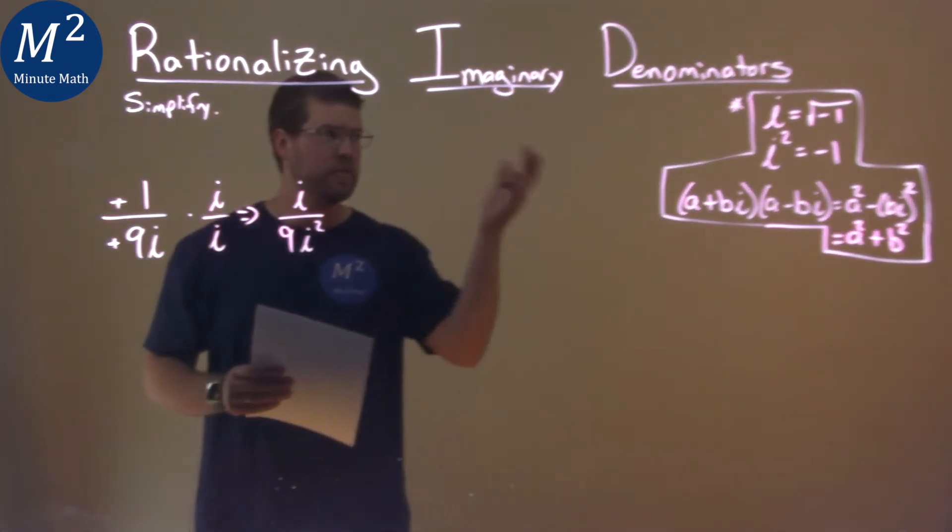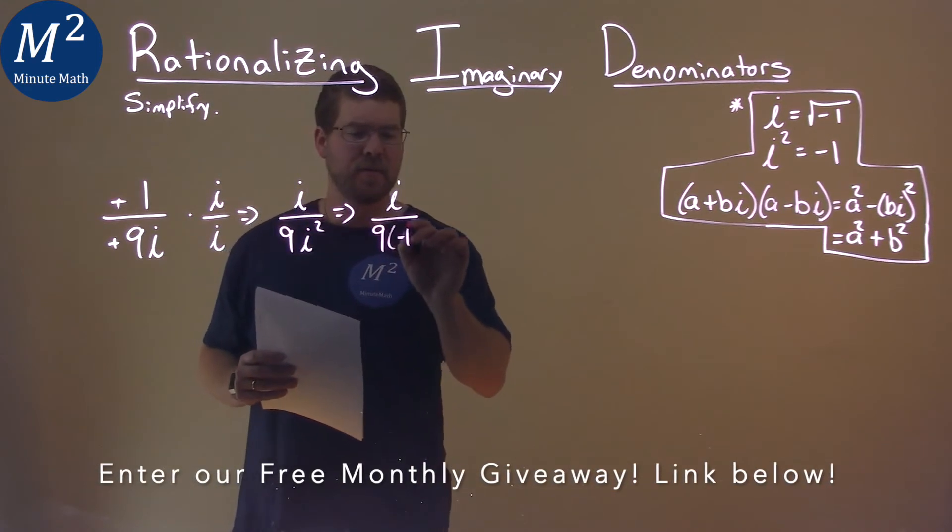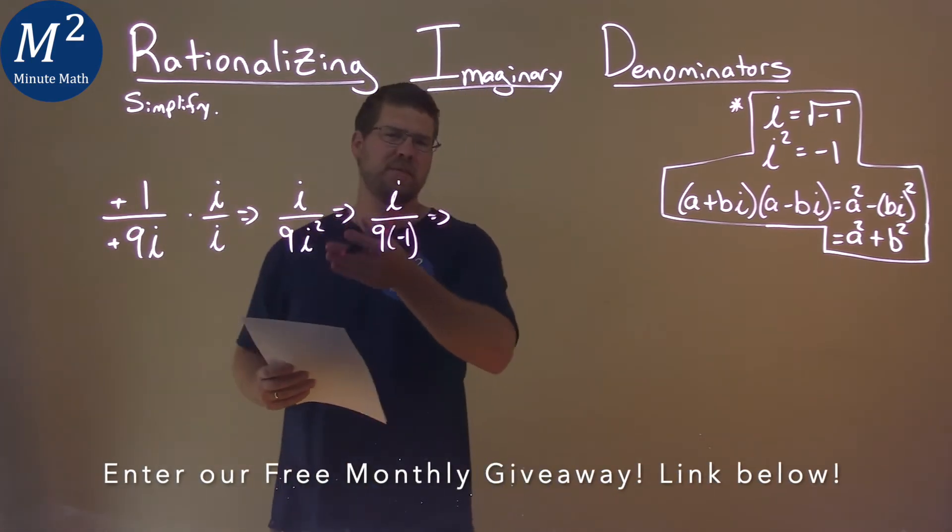Well, we know i squared is equal to negative 1. So we have i over 9 times negative 1. And then the negative 1 times 9 is negative 9.